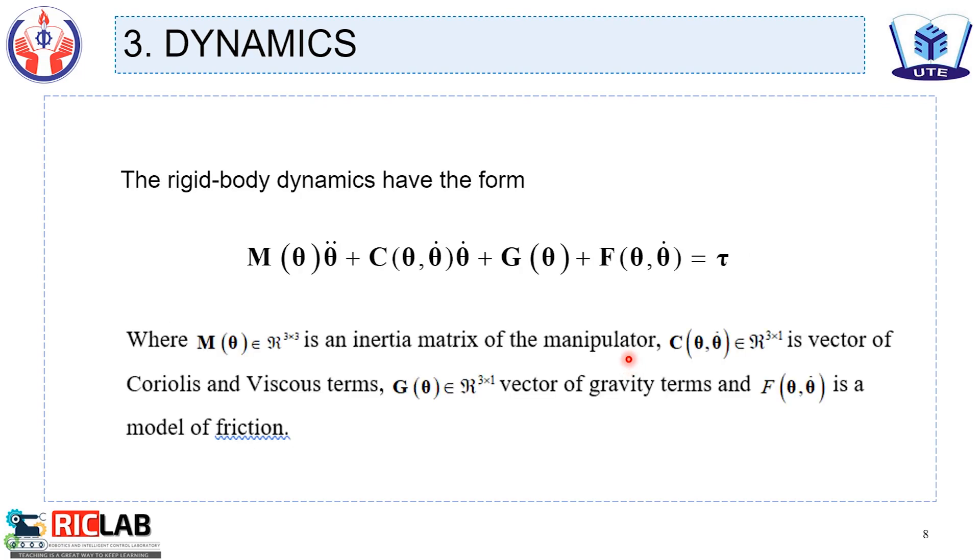The rigid body dynamics have the form like this: M, C, G, and tau is torque. Where M is an inertial matrix of the manipulator. C is a vector of Coriolis and viscous terms. G is a vector of gravity terms. And F is a model of friction.